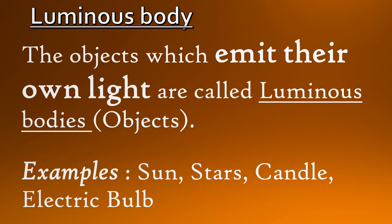Starting with luminous bodies: the objects which emit their own light are called luminous bodies or objects. Examples include the sun, stars, candle, and electric bulb.